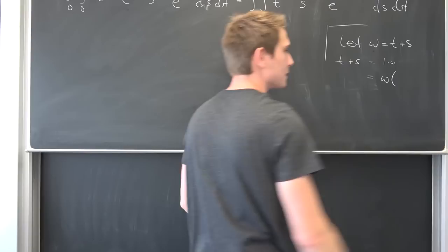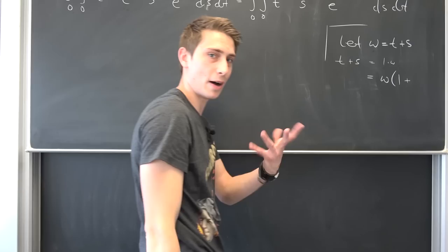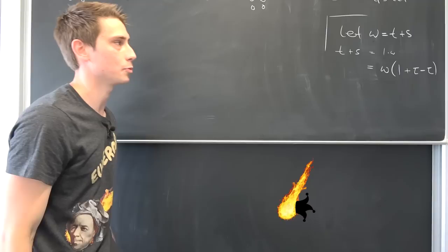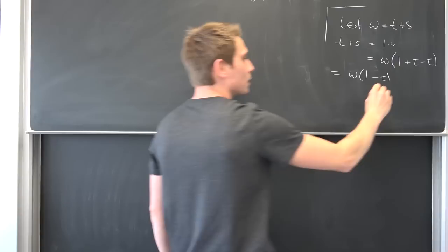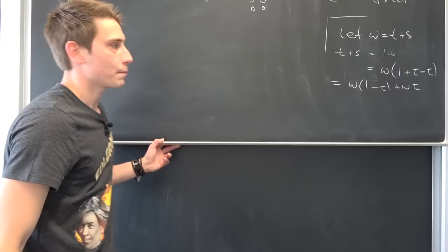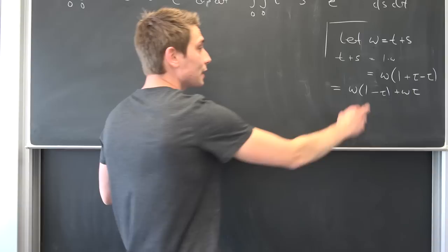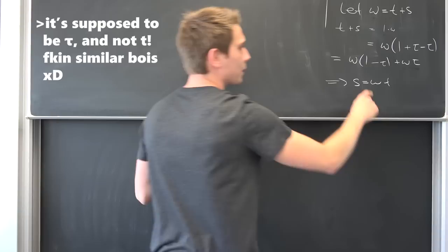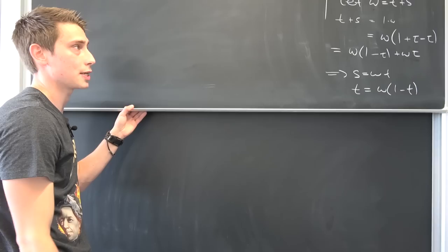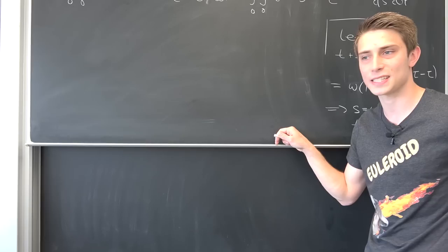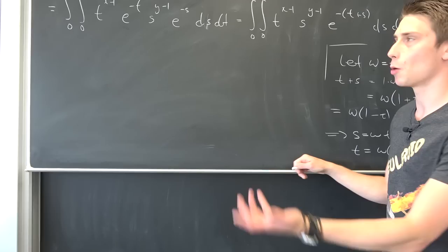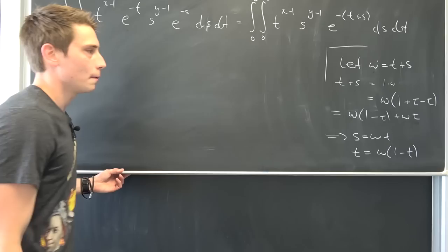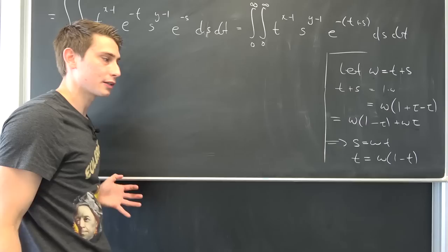We get omega times (1 minus tau) plus omega times tau. Meaning we can compare coefficients: s is nothing but omega times tau, and t is nothing but omega times (1 minus tau). So we have introduced the change of variables with a little motivation for where those two new variables come from.